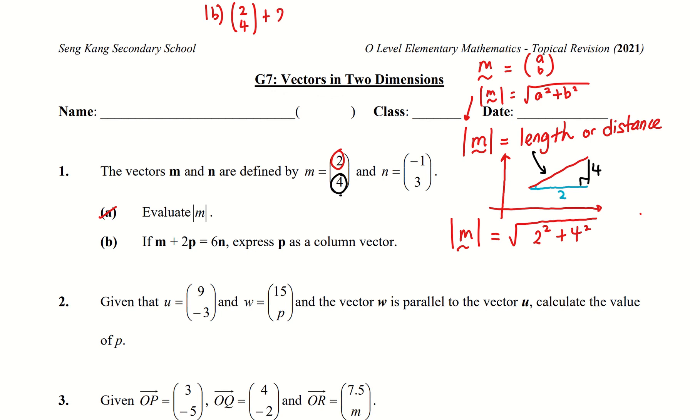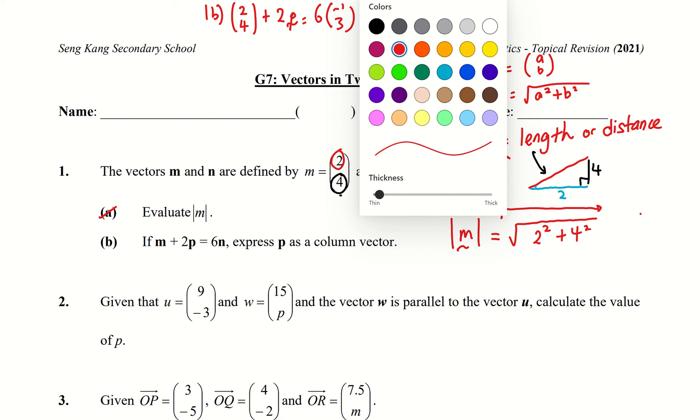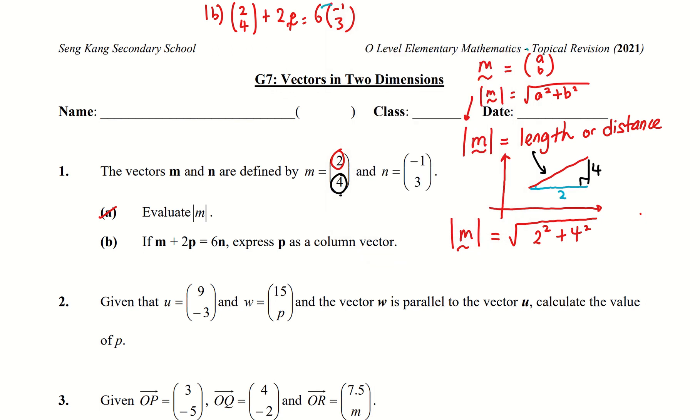If I have m plus two times p equals - there is no need to write bracket - six times n, then you want to understand that scalar vector means I want to multiply inside. So you have negative 6, negative 6, 18. 2p and this is 2, 4.